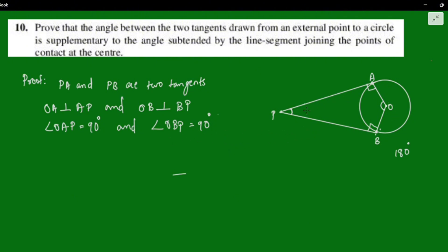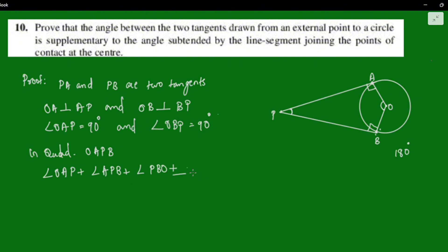Now we have quadrilateral OAPB. In quadrilateral OAPB, angle OAP plus angle APB plus angle PBO plus angle AOB is equal to 360 degrees. Angle OAP is equal to 90 degrees, and angle OBP is equal to 90 degrees — they refer to the same angles.